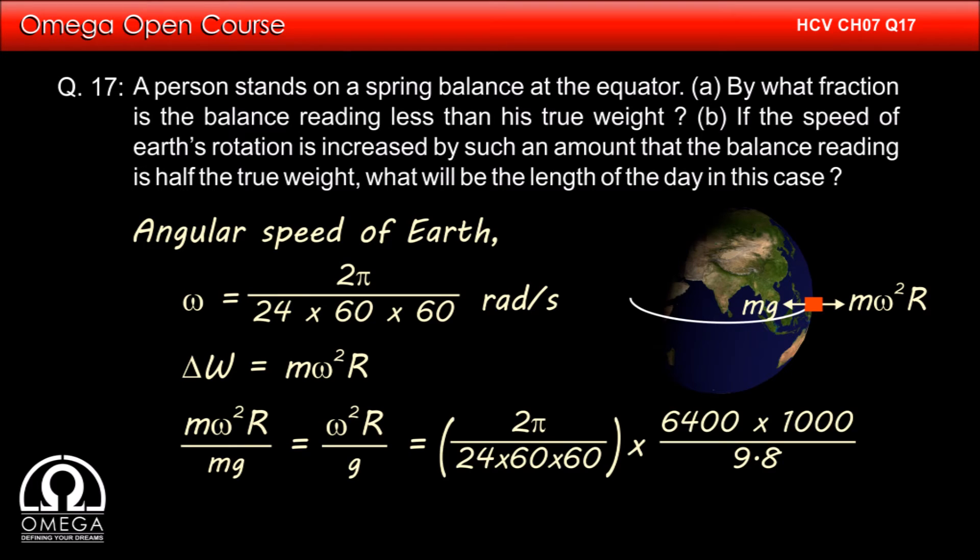Putting the values, this becomes 2π divided by 24 × 60 × 60 × 60 × 6400 × 1000 divided by 9.8. Simplifying, we get 3.5 × 10⁻³. This is our answer to part A of the question.